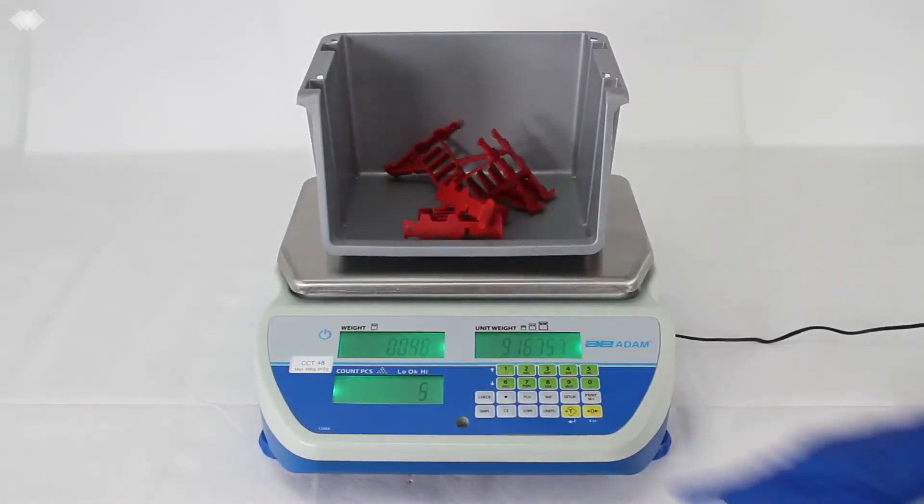Cruiser counting scales have three separate displays to simultaneously show piece weight, total weight and piece count.